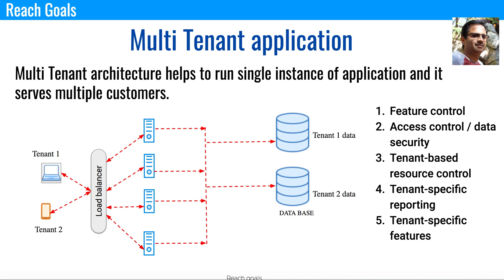The fifth reason is tenant-specific features. There may be multiple subscription tiers — a five-dollar subscription, a ten-dollar subscription, or plans called Silver, Gold, and Platinum. Different features are given to tenants based on their plan. If I want to differentiate and give specific features to each tenant, I need a mechanism to figure out who the tenant is, so I can limit features at the backend accordingly.